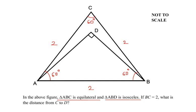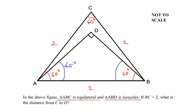Triangle ABD is given as isosceles, and we can see that angle D is already given as 90 degrees. Using the angle sum property, we can see that angle A from triangle ABD is 45 degrees and angle B from triangle ABD is also 45 degrees.